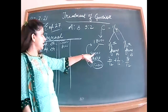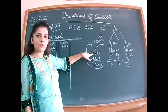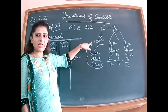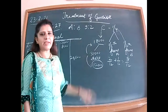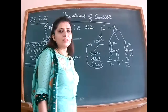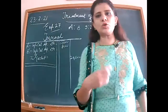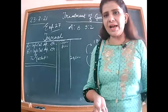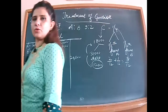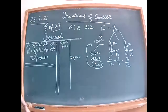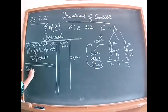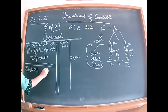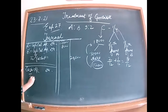Out of 30,000, C is bringing only 18,000 in cash. Cash account debited to Premium for Goodwill — 18,000.